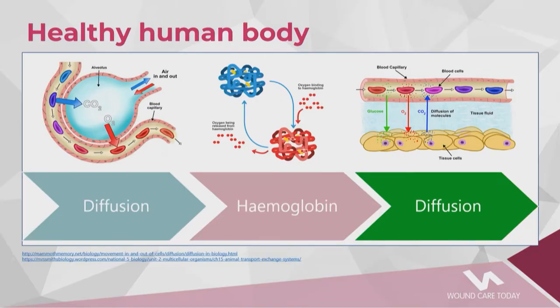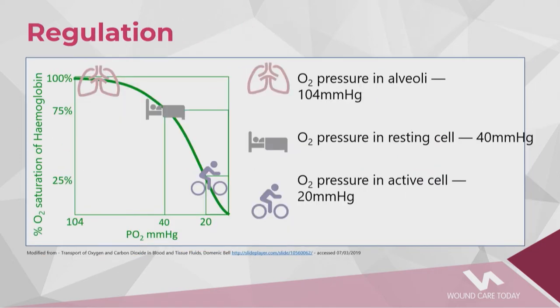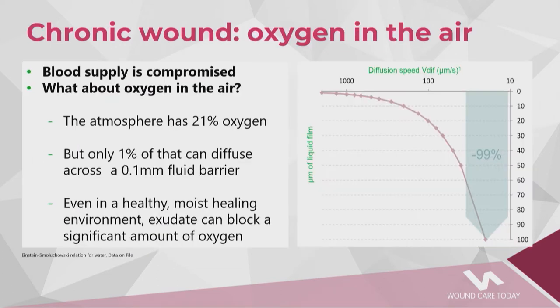In the healthy body, as we breathe, oxygen is taken into the alveoli, passes into the bloodstream, and connects with hemoglobin which transports it through the vessels. The hemoglobin then diffuses oxygen through vessel walls into tissues that require it for energy or healing. In the lungs, hemoglobin loads up with oxygen. As it reaches a resting cell, a partial pressure of 40 mmHg releases a quarter of this oxygen. At an active cell, a partial pressure of 20 mmHg releases 75% of the oxygen.